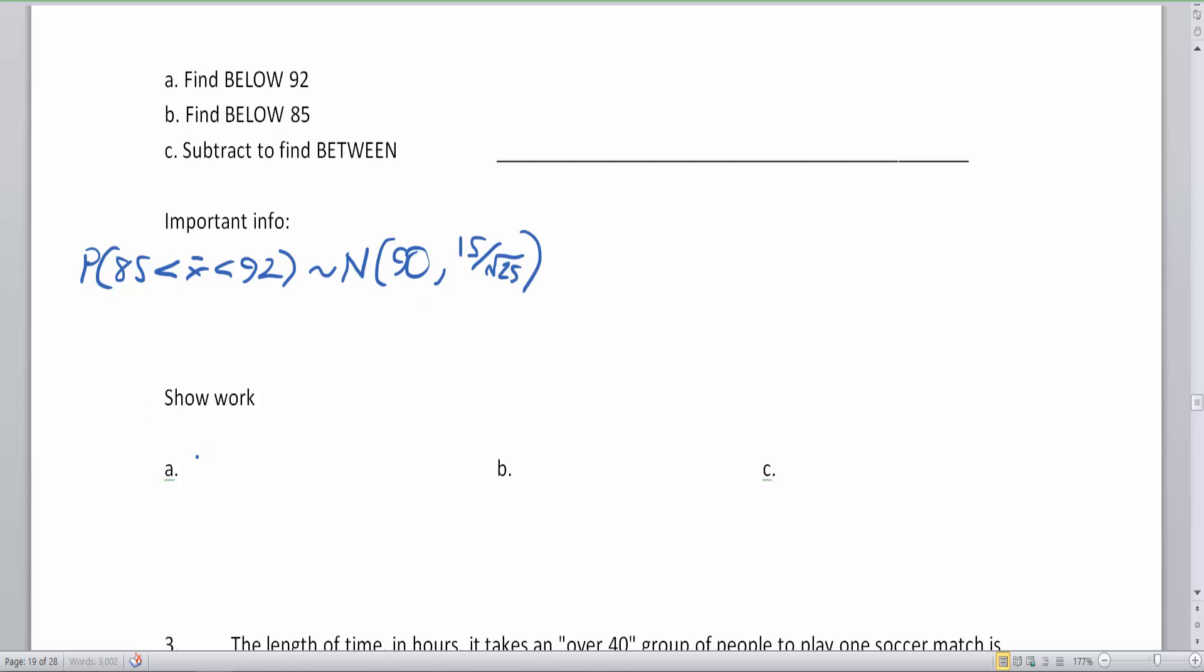So we are now going to take our three problems. The first problem is to do below 92. So Z is equal to 92 minus 90 divided by 15, which is the standard deviation, divided by the square root of the sample size. Now if I type this into the calculator, I get 2 in my numerator. My denominator is 15 divided by 5 because the square root of 25 is 5. So it's two thirds, and two thirds as a decimal is 0.67.